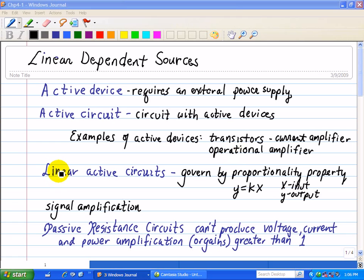Linear active circuits are governed by the proportionality property y=kx, where y is the output, k is a constant (in this case a scalar multiplier), and x is our input.